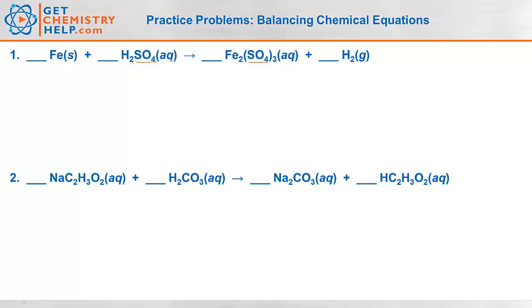We have one iron on the reactant side, two irons on the products, so let's make this two irons. Now we have two hydrogens on the reactants and two hydrogens on the products — that's fine. For sulfate, we have one sulfate but three sulfates on the product side, so let's make this three sulfates. Doing that gives us three times two, six hydrogens, so this needs to become six hydrogens by multiplying by three.